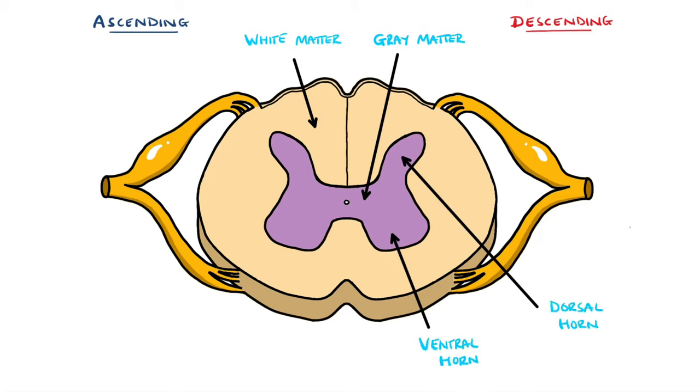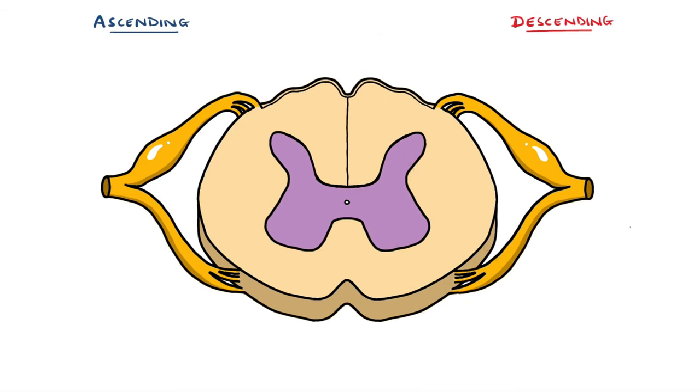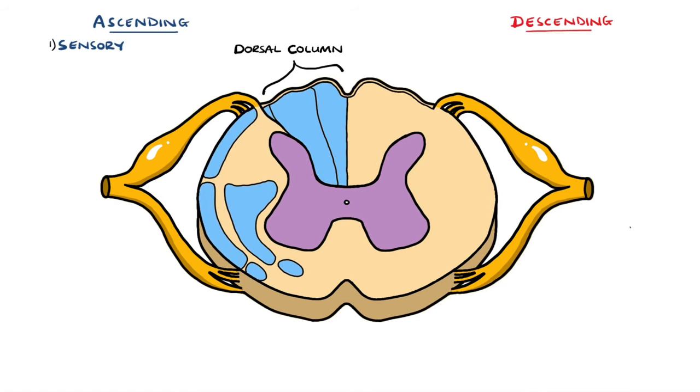The ascending pathways are responsible for transporting information from the body. These are sensory tracts. We will color these tracts in blue, and starting from the posterior column, also known as the dorsal column, we have the fasciculus cuneatus and fasciculus gracilis. These are responsible for fine touch or tactile sensation, vibration and proprioception.